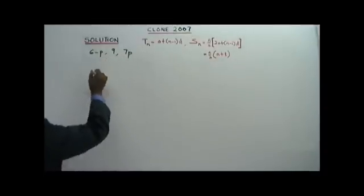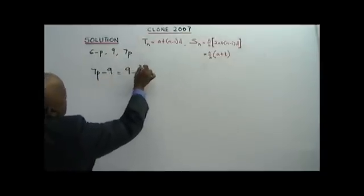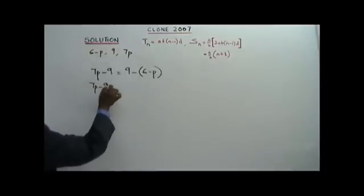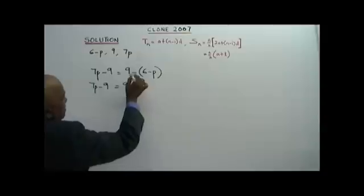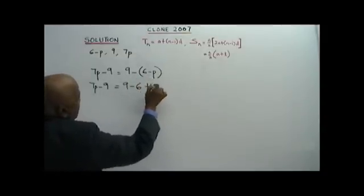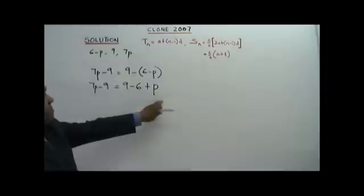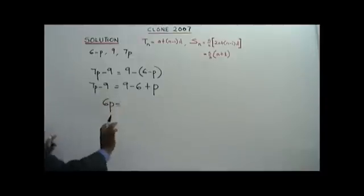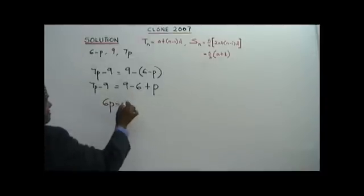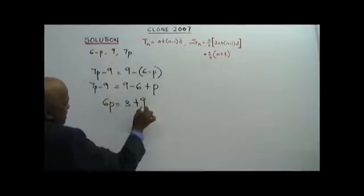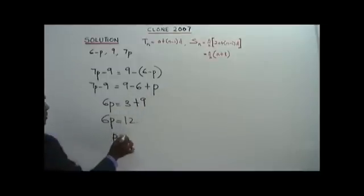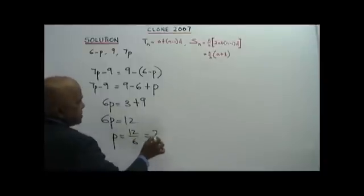So, right minus left: 7P minus 9 equals 9 minus bracket 6 minus P. That gives 7P minus 9 equals 9 minus 6 plus P. So 7P minus P equals 9 minus 6 plus 9, giving 6P equals 12. Therefore P equals 12 over 6, which is 2.